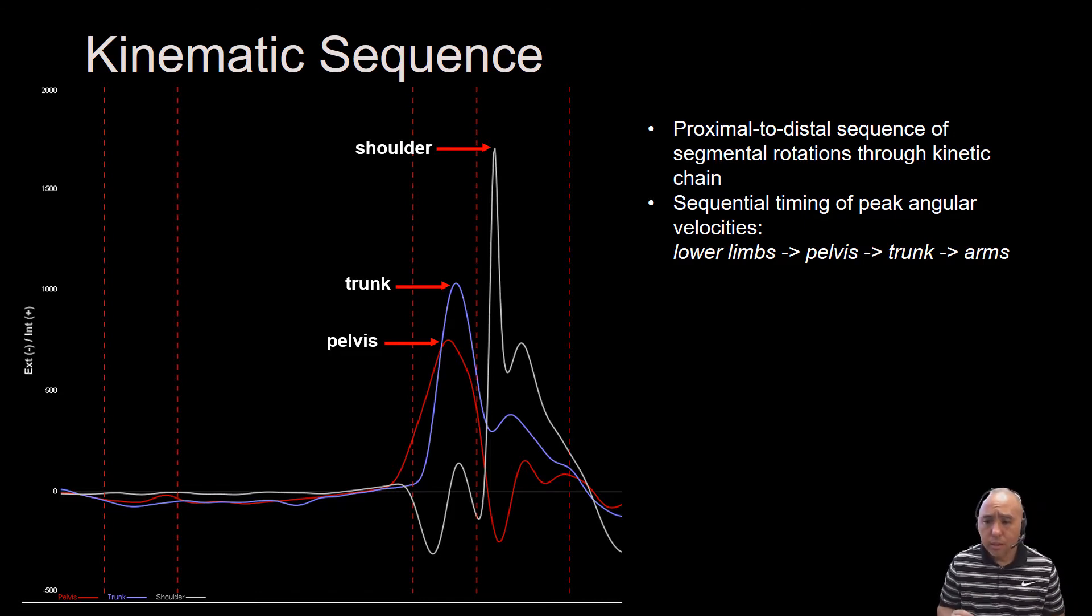And typically what you see in terms of sequential timing, whether we're talking about a baseball pitcher or a baseball hitter, it goes from the legs up through the pelvis, up through the trunk, and through the arms.